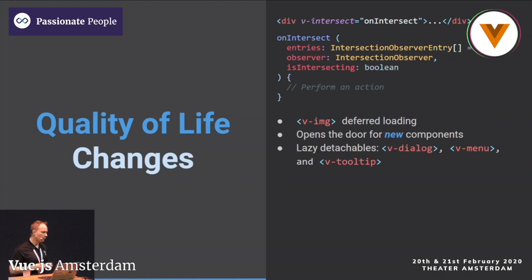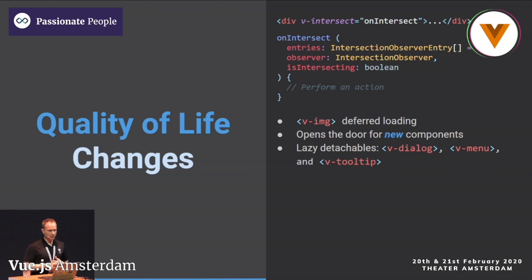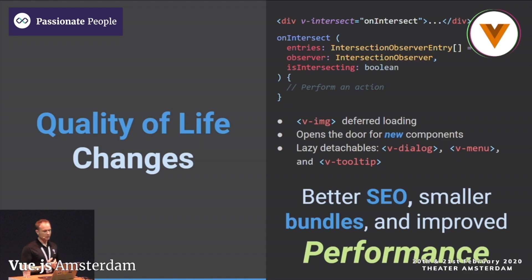This directive enables new ways to design components. For example, if you have a table of contents and scroll down and the highlighted item changes, this directive enables that kind of functionality. Also, in 1.5 we had detachables — dialogs, menus, tooltips — components whose content detaches to the root of your application. In version 2, we realized most people don't need them right away, so we made everything lazy by default. This drastically decreased application start time. You can still make it eager — for example, if you want something to show for SEO. We're trying to give users the best performance, smaller bundles, and improved SEO.